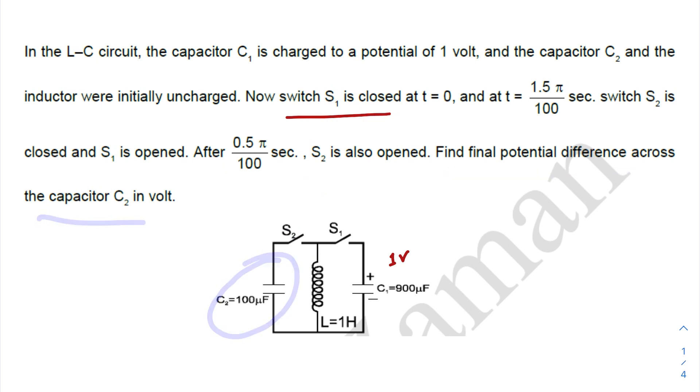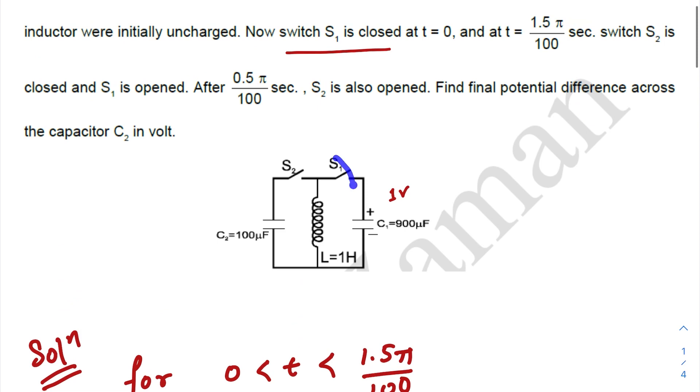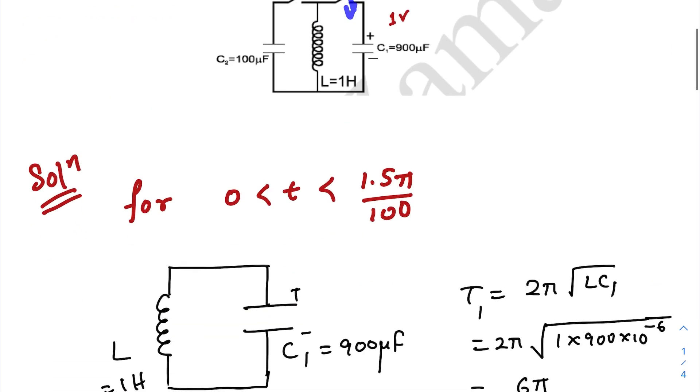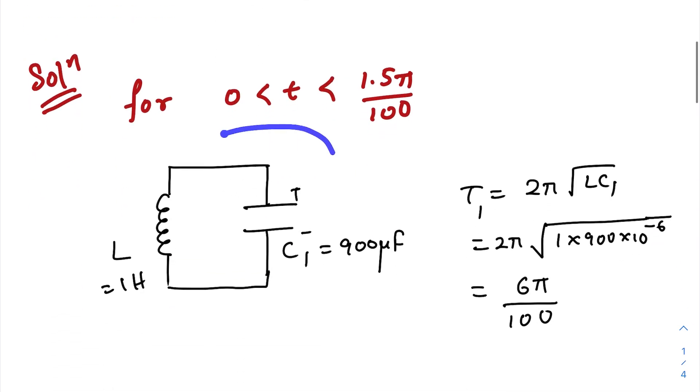Okay, now when you are switching on S1, initially this is the LC circuit that we are creating. First find out the time period of this LC circuit. It is 2π√(LC1). It is this one.